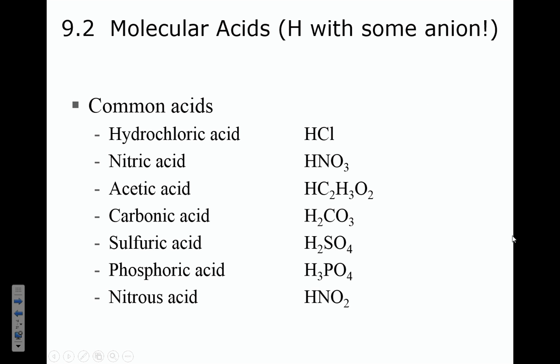Let's look at a list of some common acids. Every one of these is an H with some anion after it. HCl is hydrochloric acid, a common useful acid in the chemistry classroom. HNO3 is nitric acid — fertilizers and explosives are typically made from nitric acid. Acetic acid is vinegar. Carbonic acid, sulfuric acid, and phosphoric acid — a common flavoring agent in lots of sodas — are on the list. And then nitrous acid, similar to nitric acid but with a different anion.